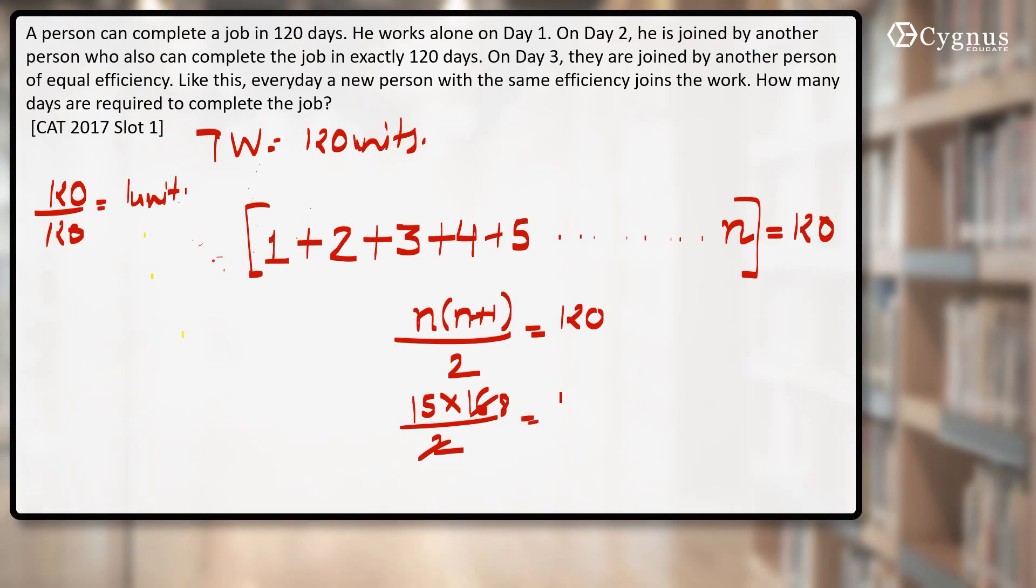Cancel it out. 8 times, this comes out to be 120. That means if they work in the similar fashion, they can finish the whole work in how many days? 15 days. So the correct answer has to be 15 days.